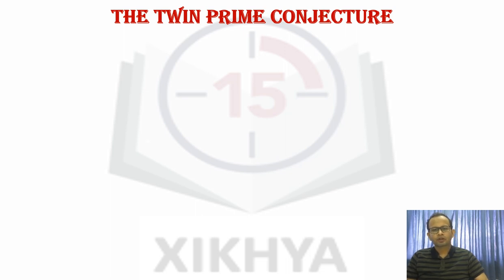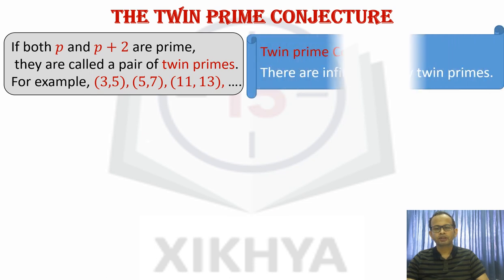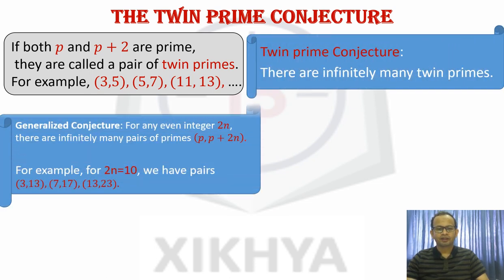There is another famous conjecture concerning primes known as the twin prime conjecture. So what are twin primes? So a pair of primes p and p plus 2 are called twins if they differ by 2. In other words, 3 and 5 or 5 and 7, 11 and 13, they differ by 2 and both are primes, they are twin primes. The question is whether there are infinitely many twin primes. And there is a generalized conjecture also that for any even number, there should be infinitely many pairs of prime numbers p and p plus 2n. For example, if we take our even number to be 10, then we should have infinitely many pairs such as 3 and 13, 7 and 17, 13 and 23.